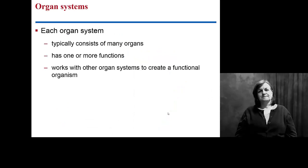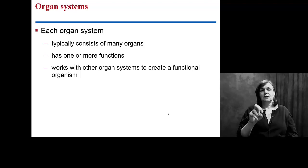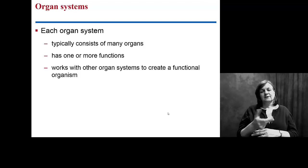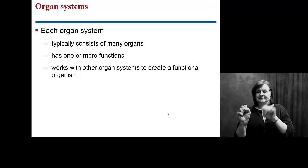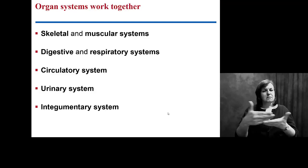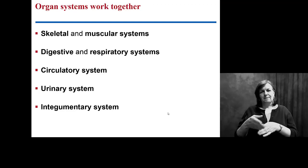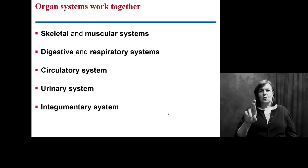Each organ system is made up of several organs with many functions, typically. When we look at an organ system functioning as an entire unit, the organs in the organ system are what regulate how it does that. We actually look at eight major organ systems in you.